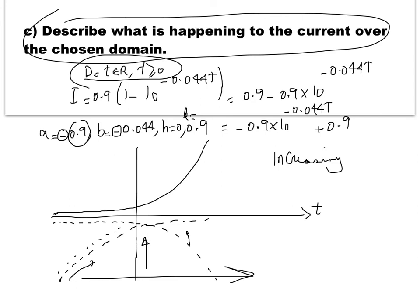Regarding the rate of change: if we draw tangent lines along the curve, the slope starts at some positive value and decreases toward zero as the graph approaches the horizontal asymptote y = 0.9. So the function is increasing, but the rate of change is decreasing over the domain t ≥ 0.